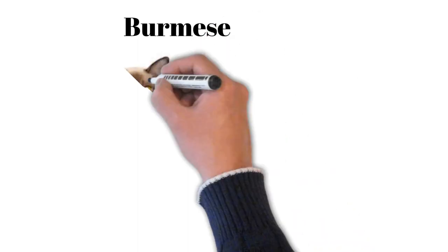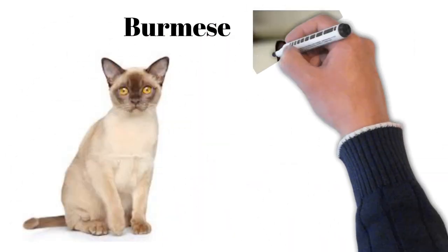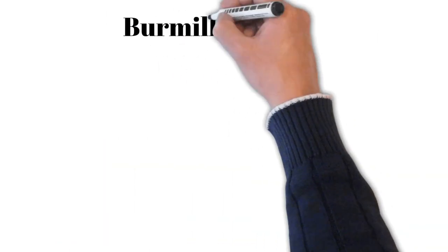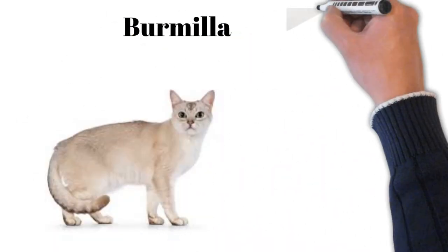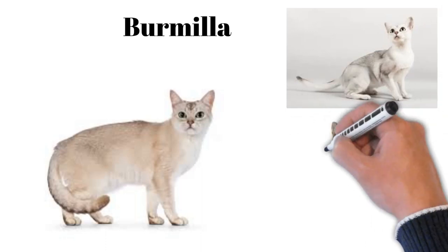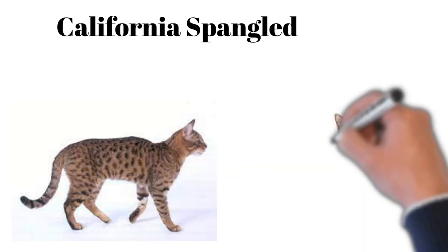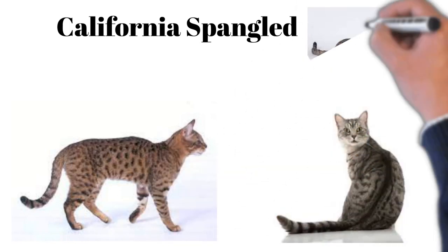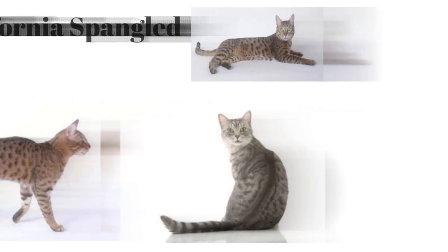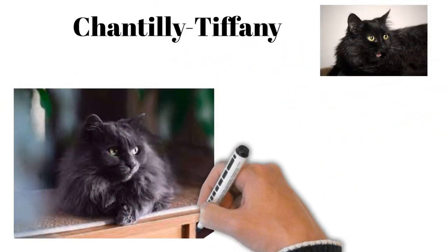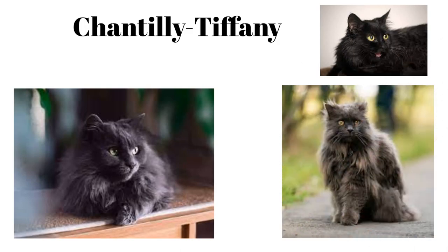Burmese: people-oriented, affectionate, compact body, enjoys interactive play. Burmilla: shimmering coat, playful and affectionate, a Burmese-Chinchilla mix. California Spangled: developed to resemble wild cats, playful, curious, affectionate. Chantilly Tiffany: medium-long fur, gentle, affectionate, prefers quiet environments.